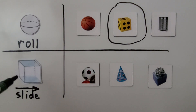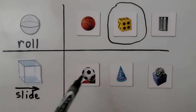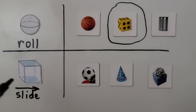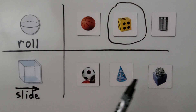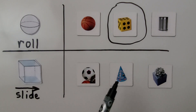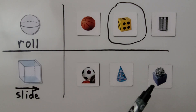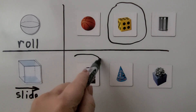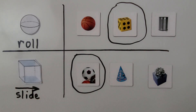Now, which object here cannot slide? This cube can slide on its flat surface — it needs a flat surface to slide. Which one of these objects cannot slide: a soccer ball, a birthday party hat, or a birthday present? If you said sphere, you're right. They don't have a flat side, so they cannot slide.